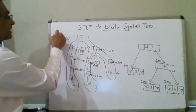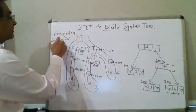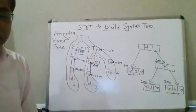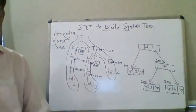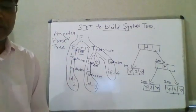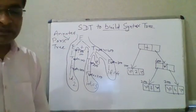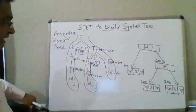This result is called an annotated parse tree. In any parse tree, if we associate values to the variables, it is known as an annotated parse tree. This was the example of building the syntax tree; now we will see an example of doing type checking using SDT.